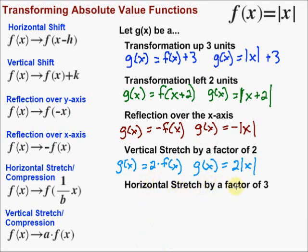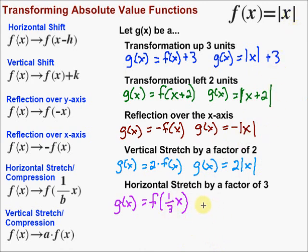The last one is a horizontal stretch by a factor of three. Here's the recipe: g(x) is equal to f of (one over b times x), where b is the horizontal stretch factor — in this case, three. So it's f of one-third x. We take that piece and replace x back in our function f, so g(x) equals the absolute value of one-third x.